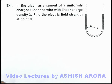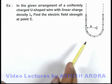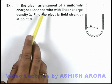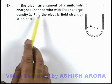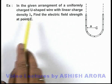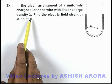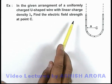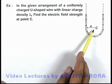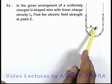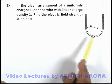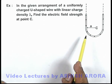In this example, we are given a uniformly charged U-shaped wire with a linear charge density lambda. We are required to find the electric field strength at point C, which is the center of the semicircular arc at the bottom of this U-shaped wire.